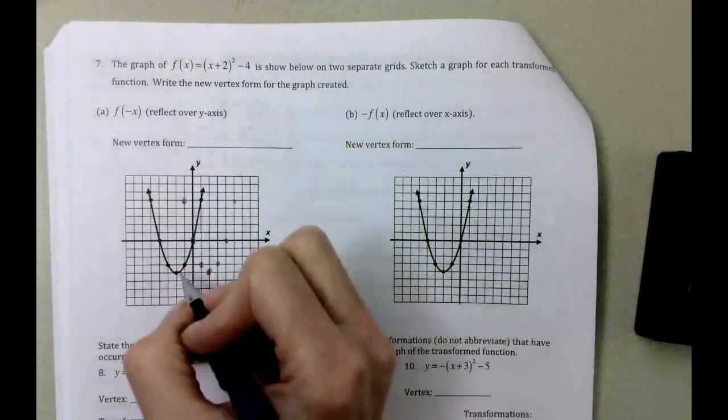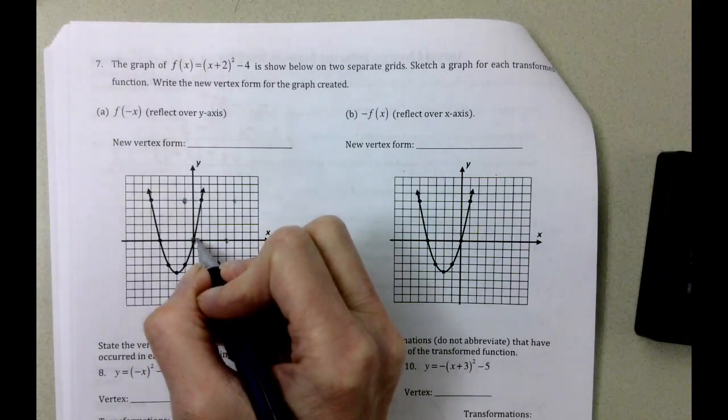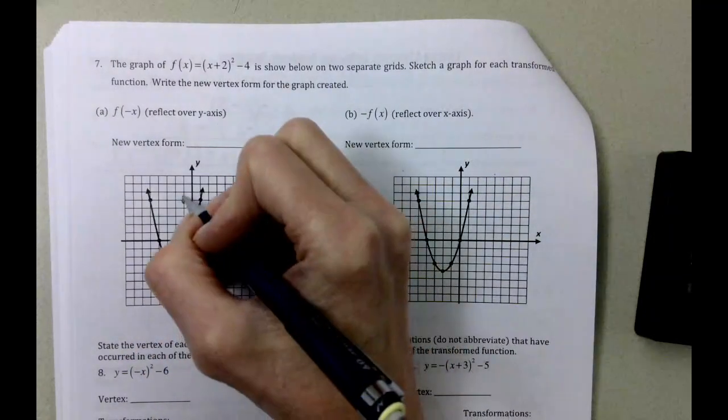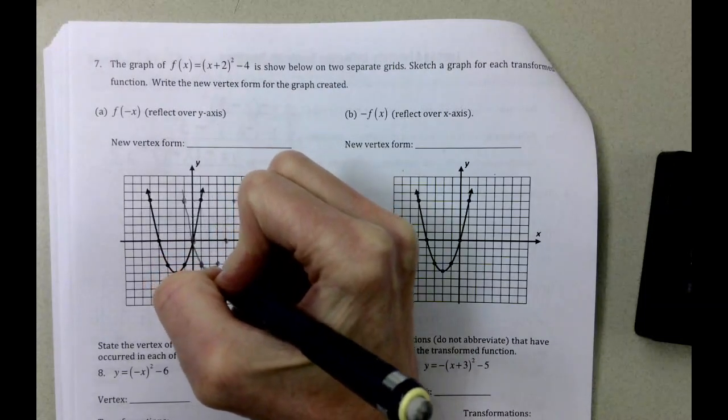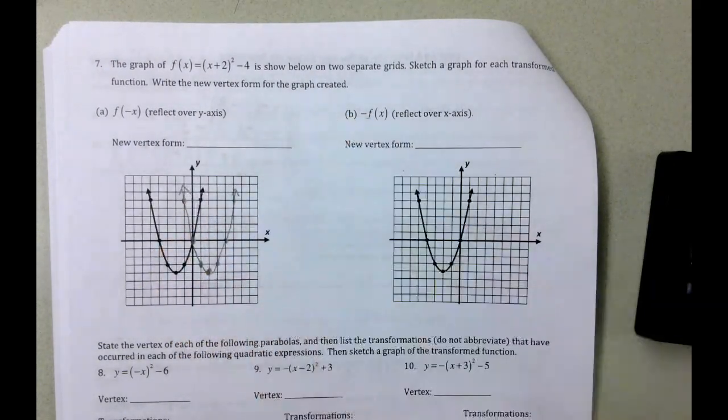So the pattern doesn't change. One space to the right, one up. Two spaces to the right, four up, and so forth. So here's our graph. Our new graph.